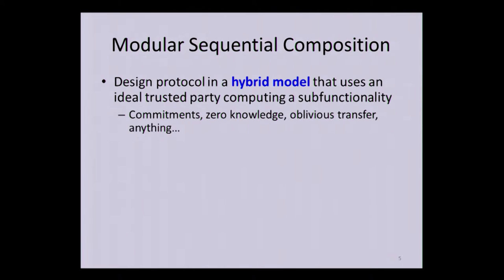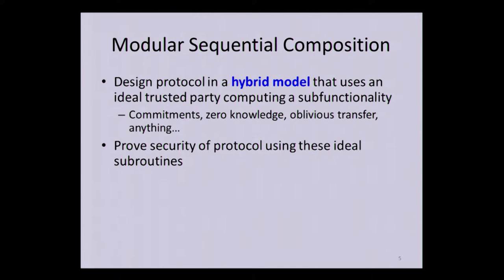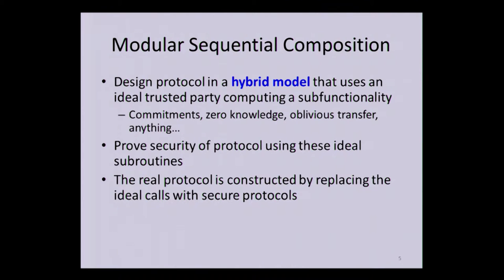So I may be constructing some large protocol and need to use commitments, zero knowledge, oblivious transfer, and other primitives. I use a trusted party to help me compute those, and I build my protocol inside this hybrid model where I have both a trusted party and regular communication. Then I prove security of my larger protocol application with these ideal calls inside to this trusted party, which facilitates a much easier analysis of security.